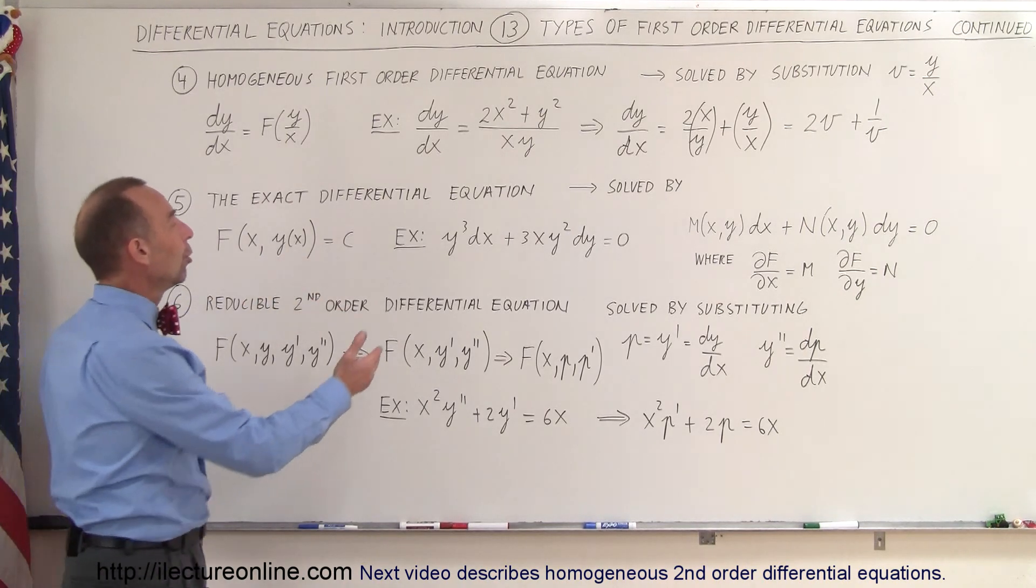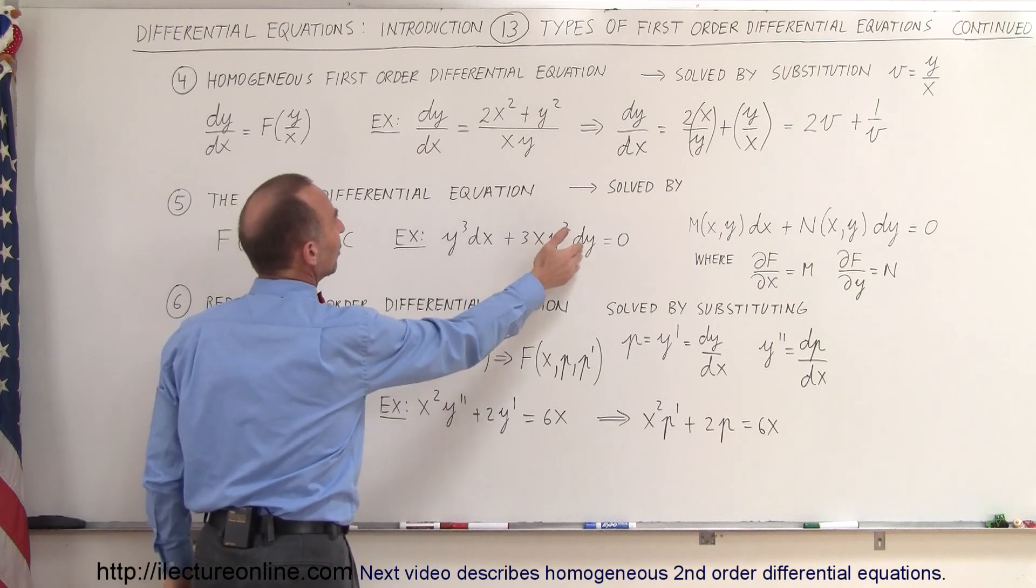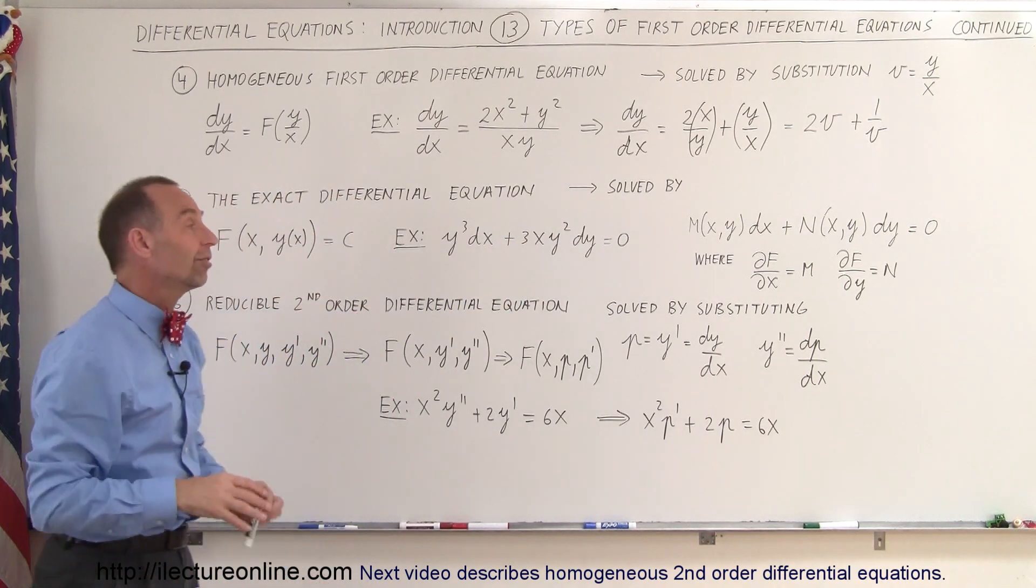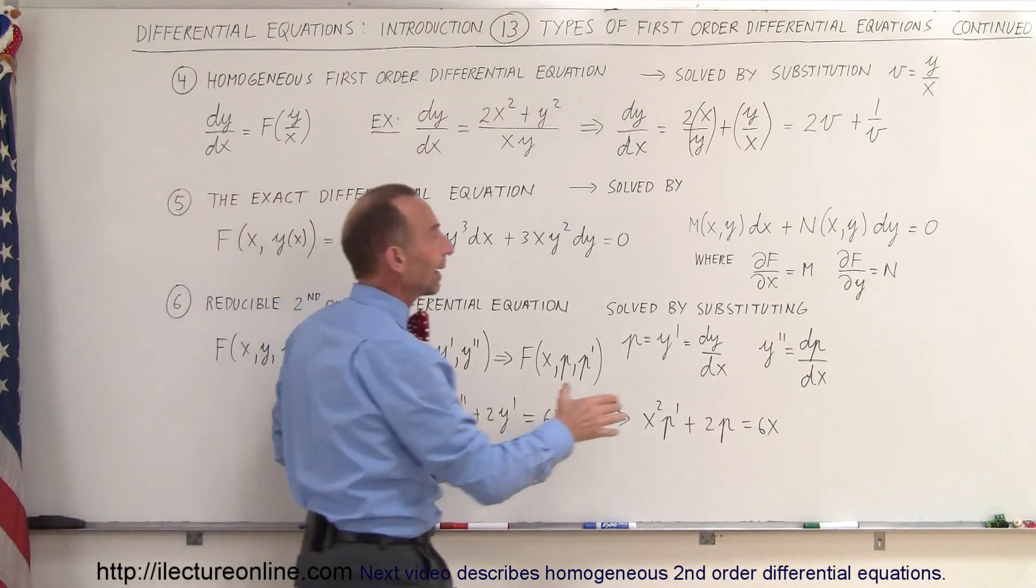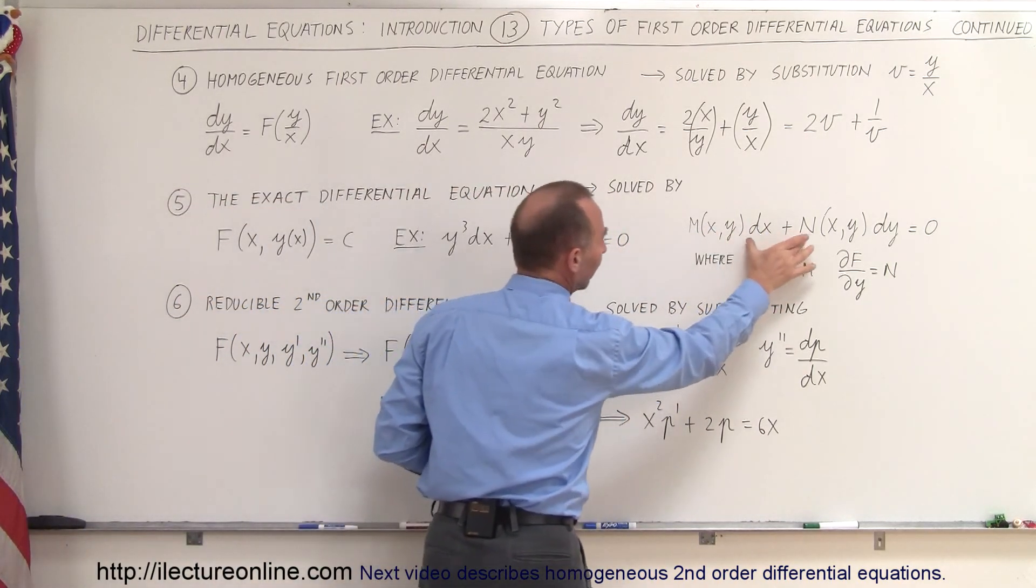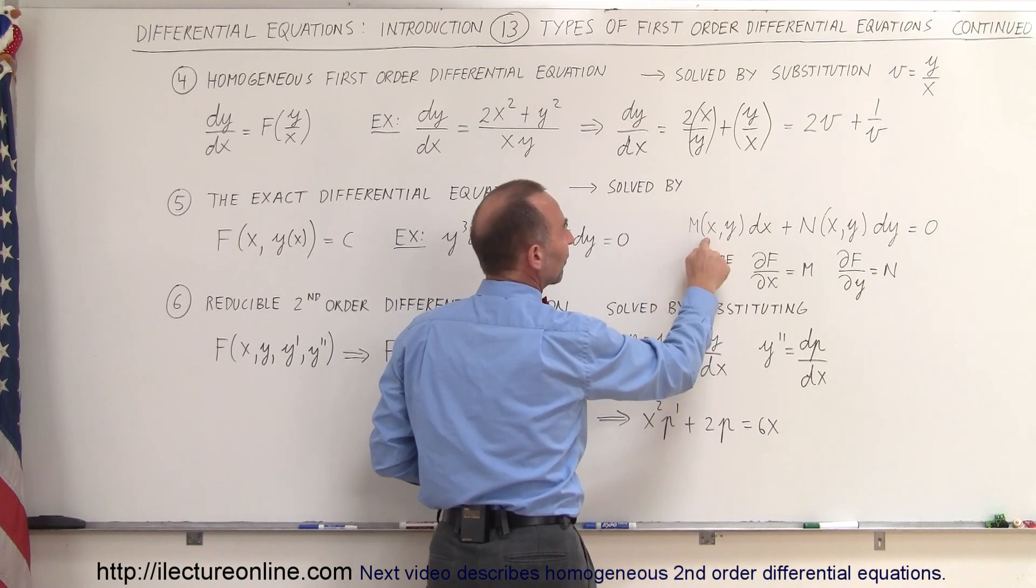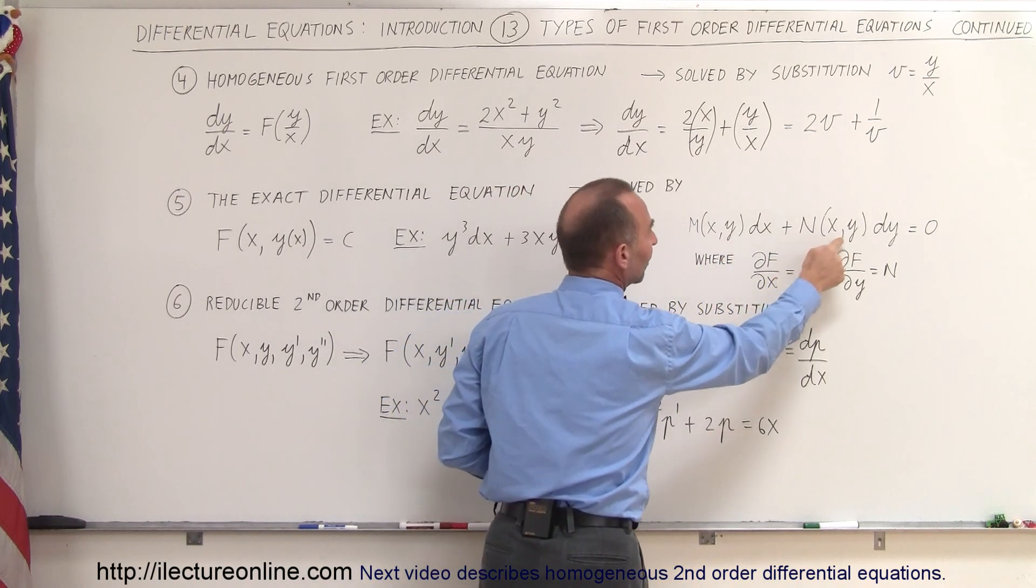So here's an example, y cubed dx plus 3xy squared dy equals 0. The reason why it's in that form is whatever equation you end up with, can you make it look like this? And that's exactly what this example looks like. So notice, some function of x and y dx plus some function of x and y dy.